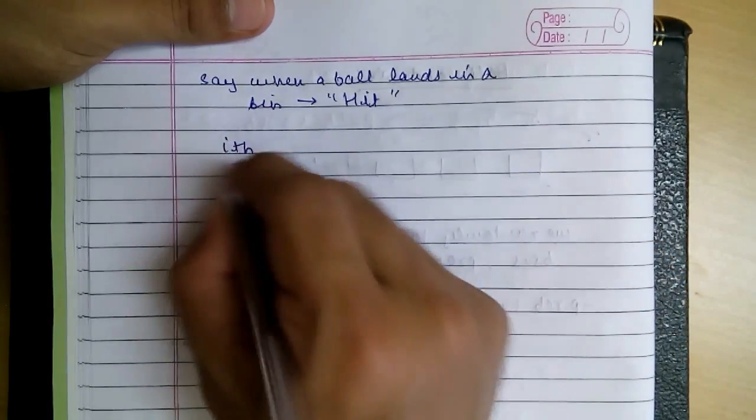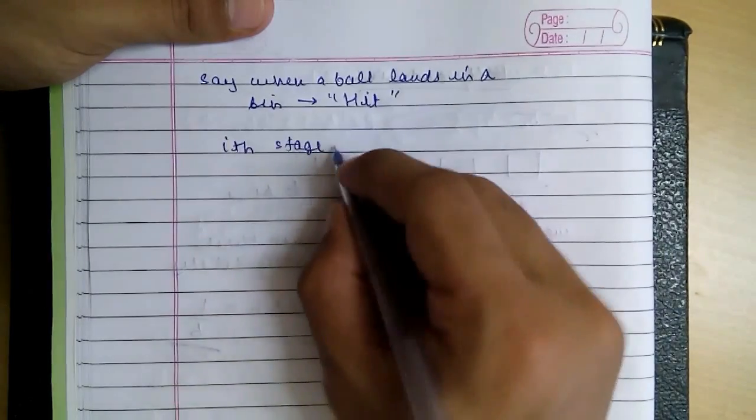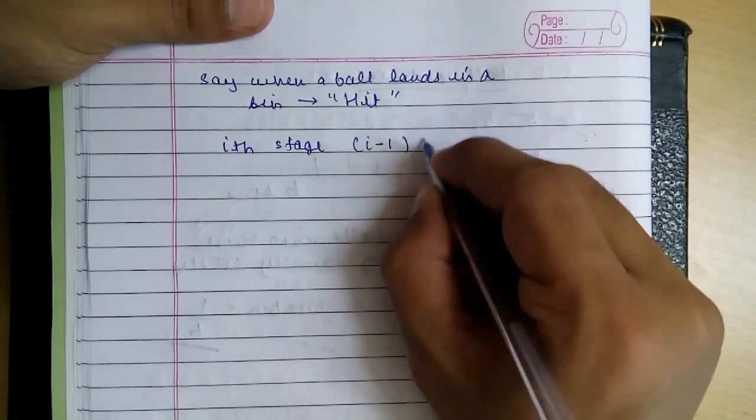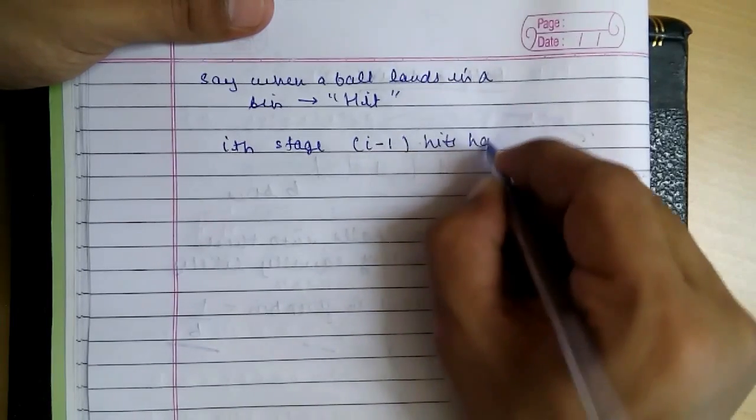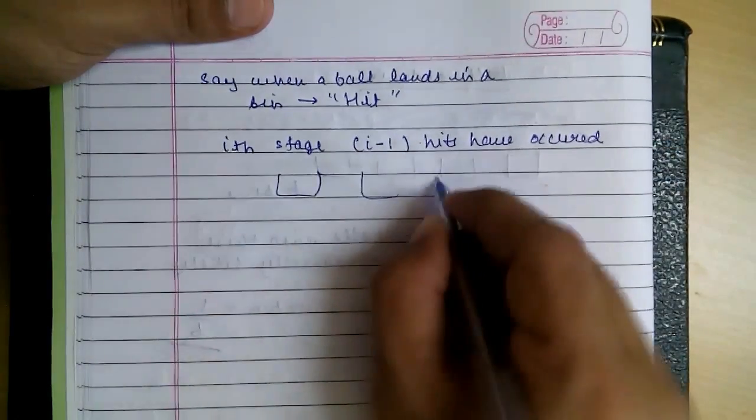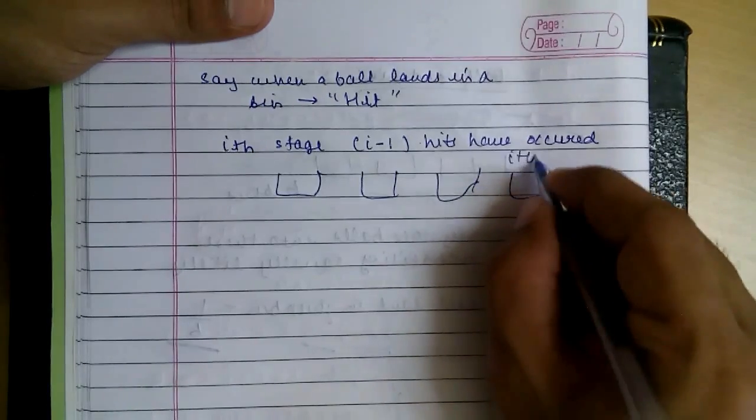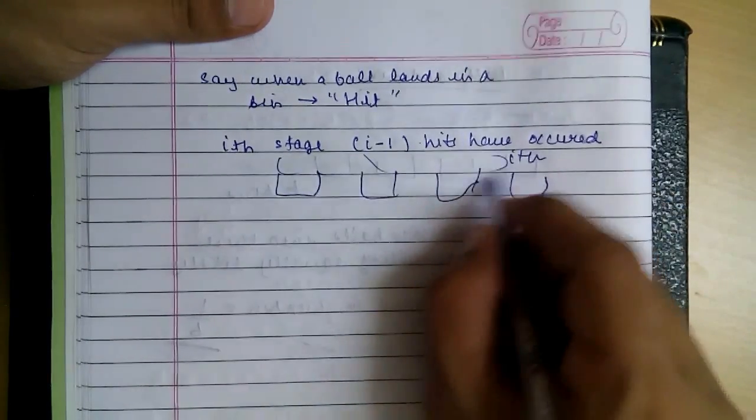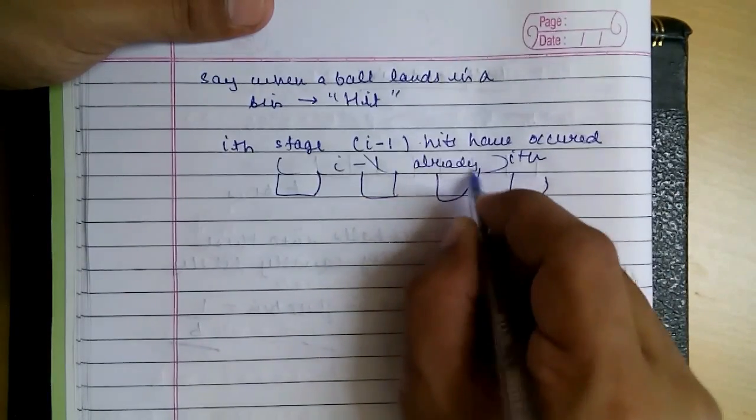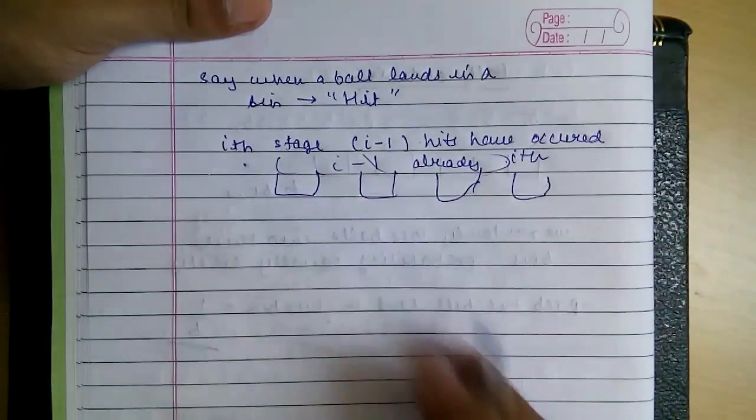In the ith stage, i-1 hits have already occurred. That is, in ith stage, i-1 bins already have balls. So i-1 hits have already occurred in ith stage.